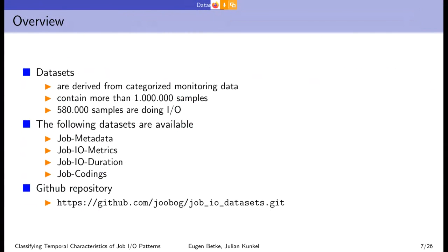So we downloaded monitoring data from one million jobs. 580,000 of them have significant I/O. So that means they have at least one high I/O or critical I/O sigma.